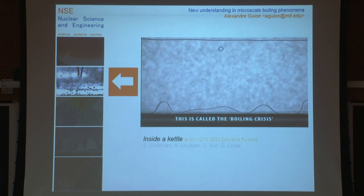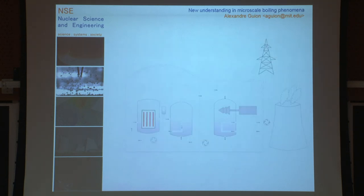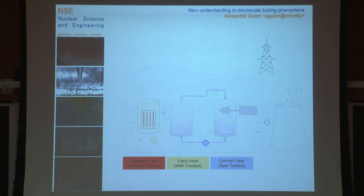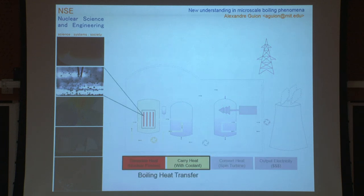This is particularly relevant in nuclear engineering. If we summarize why we're here today building nuclear power plants, we first generate heat using nuclear fission. It's a pretty amazing source of heat. Then we carry this heat to another place where we convert it into steam, spin a turbine, and output electricity.